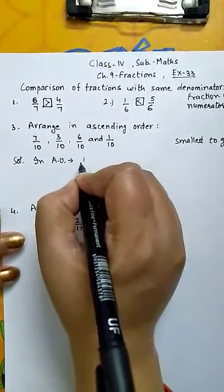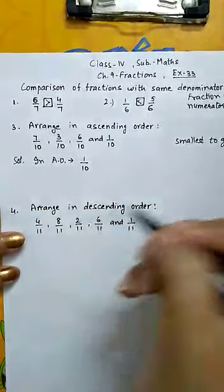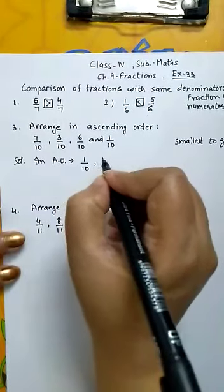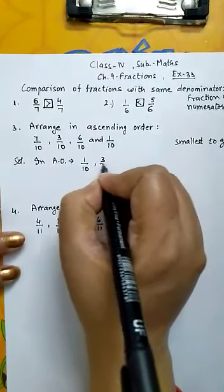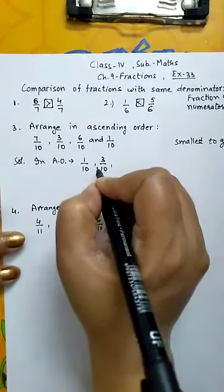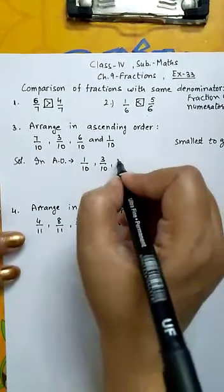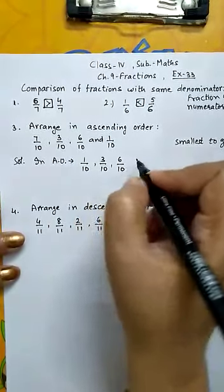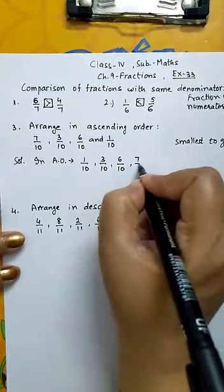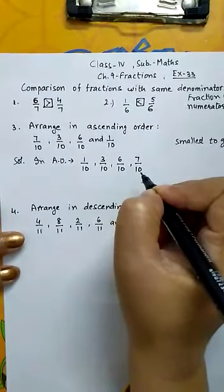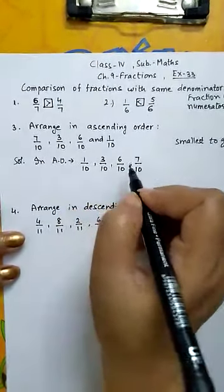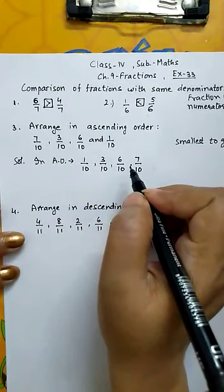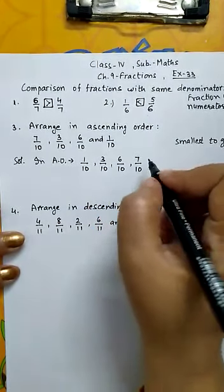Yes, 1. So 1/10 is the smallest fraction. Next is 3/10, then 6/10, and last is 7/10. All the numerators are arranged in ascending order. This is the answer.